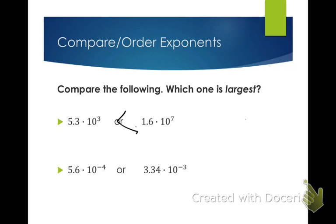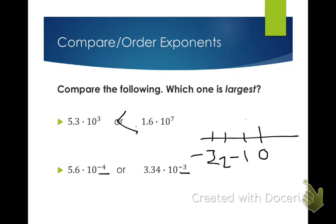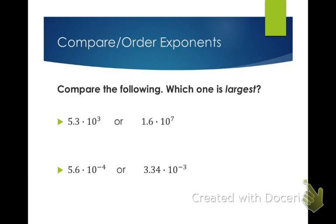If I'm looking here and I see negative four and negative three — if I think about my number line, going negative one, negative two, negative three, negative four — well, negative four is further away from zero than negative three is, so it is smaller. And again, if we're doing negative four, we're going to go over four spaces and have a lot more zeros than if we just go over three. So to compare, we would put a less than symbol here and a less than symbol here.